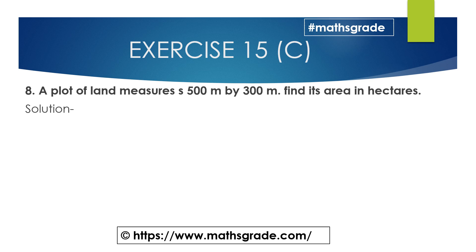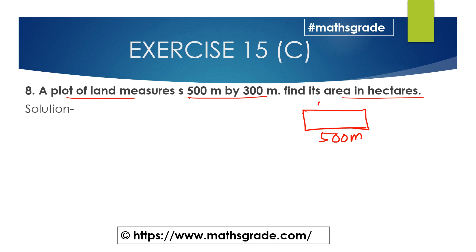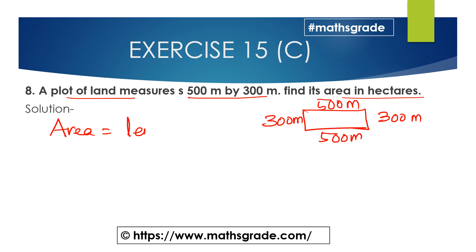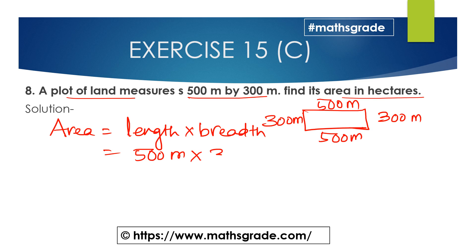Question number 8: A plot of land measures 500 meters by 300 meters. Find its area in hectares. We have a rectangular plot where length is 500 meters — opposite sides are equal, so both lengths are 500 meters — and breadth is 300 meters. We have to find the area in hectares. Area of the rectangle is length multiplied with breadth, that is 500 meters multiplied with 300 meters.